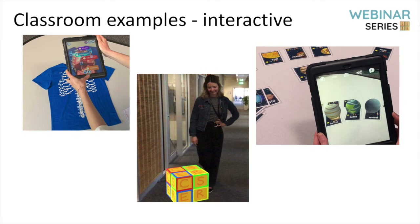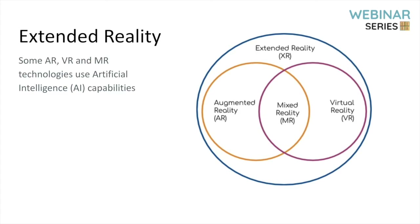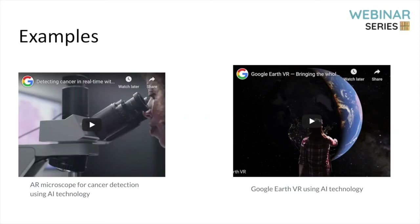We have some examples of augmented reality for the classroom: the human body, an artefact a student has made — you could have students making their own shapes to describe their stories and experiences — and a space one triggered by cards. Mixed reality is a combination of both VR and AR, and can include apps that provide augmented digital information with the option for users to go deeper with 360 experiences. Extended reality implements artificial intelligence as well. These are some examples of AR in the workplace — there for you to look at later, with the link in the presentation notes.